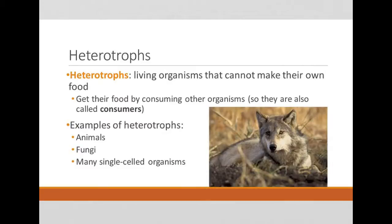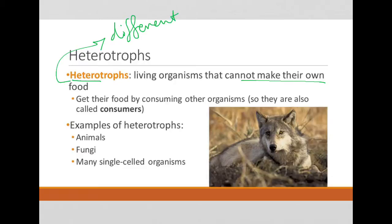Heterotrophs, on the other hand, are organisms that cannot make their own food. The prefix 'hetero,' which we will use a lot in genetics, means different. So heterotrophs are getting their food from some different source than themselves, unlike autotrophs.